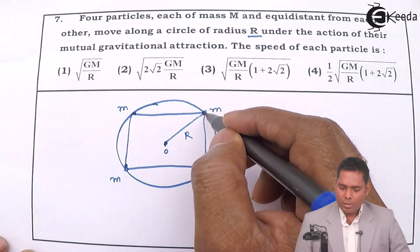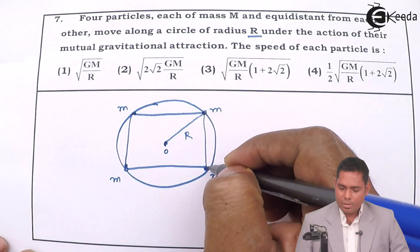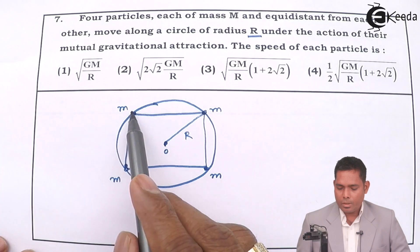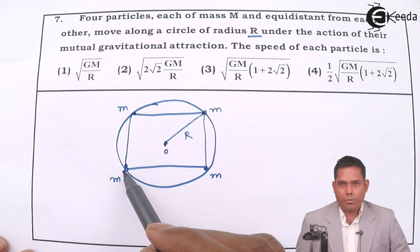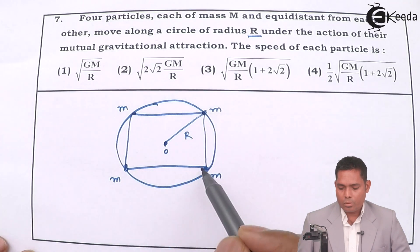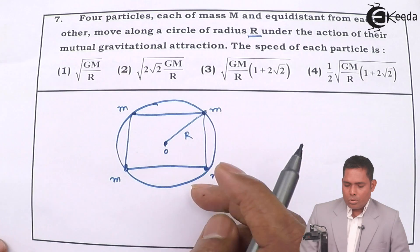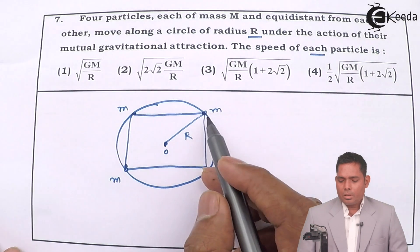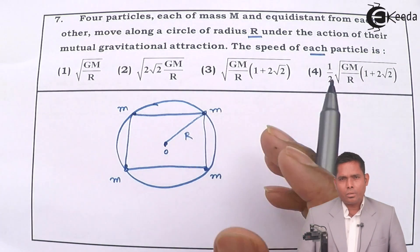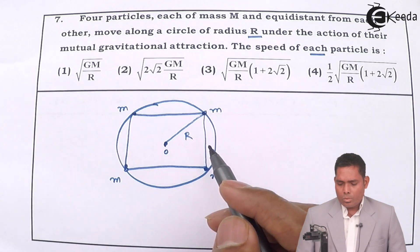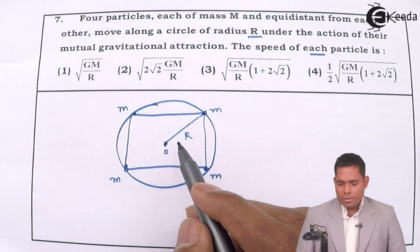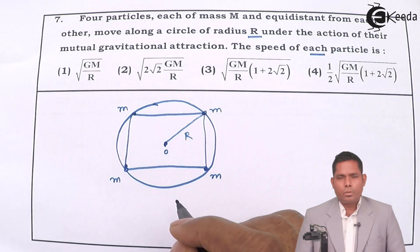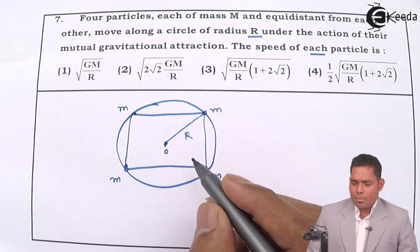Each particle is moving because of the gravitational pull by the other three. The resultant of all three forces acting on a particle provides the centripetal force. Since all forces are symmetric, I will consider any one particle — suppose this particle — and analyze the forces acting on it.